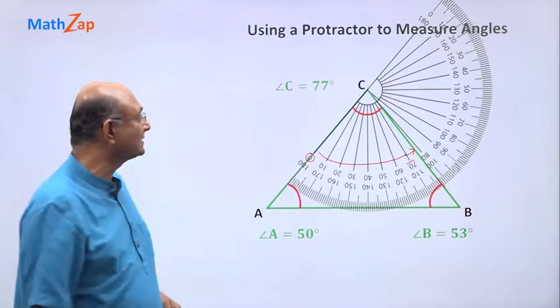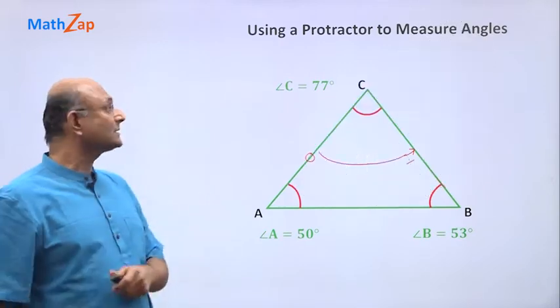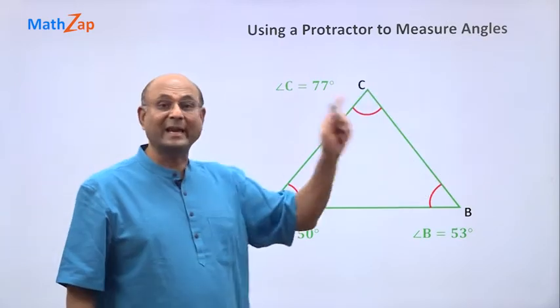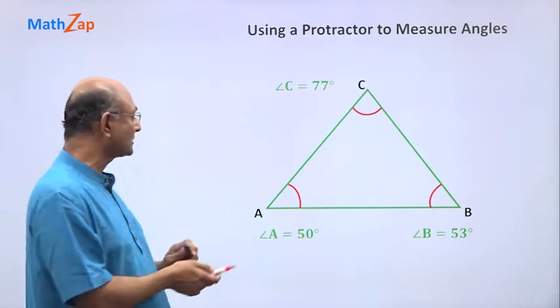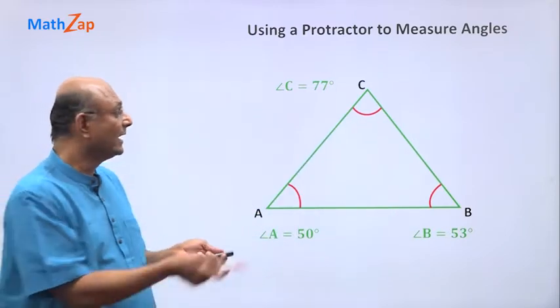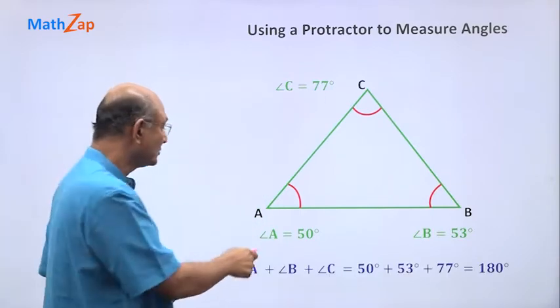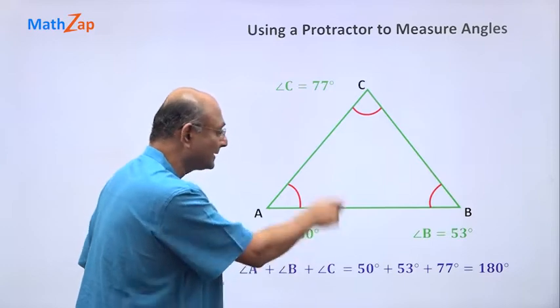Okay, let us now look at this triangle's angles a little more closely. 50 plus 53 is 103. 103 plus 77 is 180. So if I add angle A plus angle B plus angle C, I get 180 degrees. Let us see why.